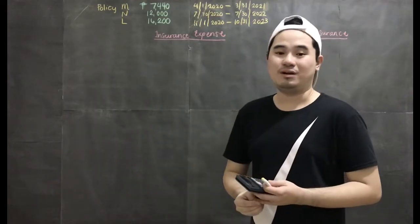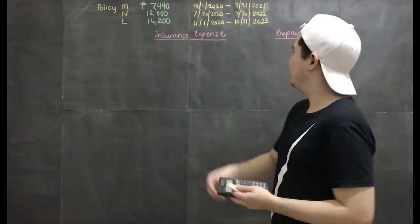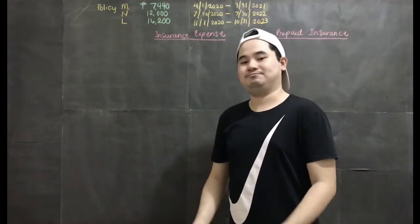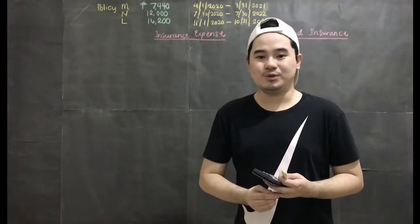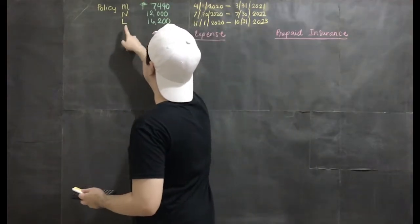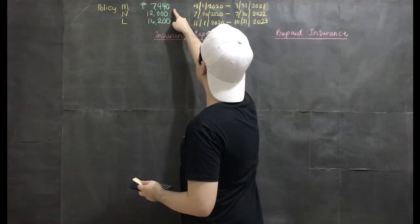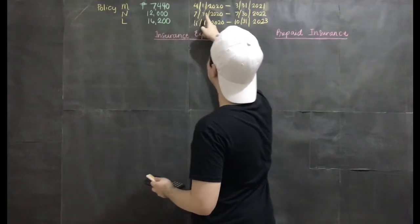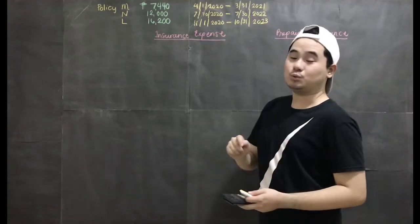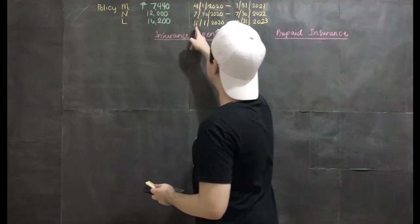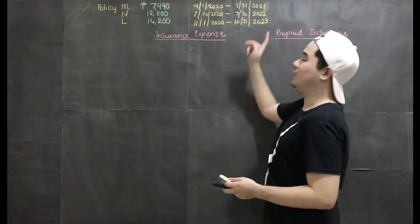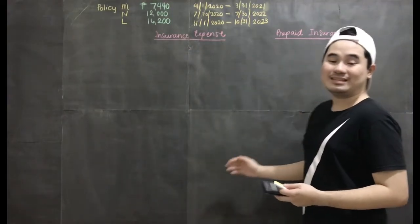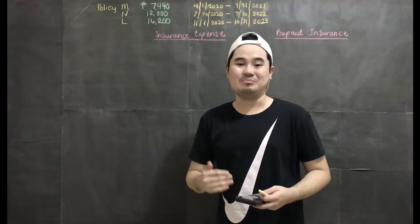Jim and Company purchased the following insurance policies: Policy M, Policy N, and Policy L. Policy M is 7,440, which will run from April 1, 2020 to March 31, 2021. Policy N is 12,000 from July 30, 2020 to July 30, 2022. And Policy L is 16,200 from November 1, 2020 to October 31, 2023. What we will solve in this problem is how much is the insurance expense and the prepaid insurance at the end of each reporting period affected by these insurance policies.